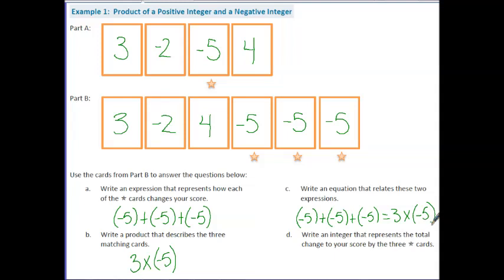Negative 5 plus negative 5 plus negative 5 is equivalent to 3 times negative 5. If we look at these two, we know that the final value of these cards: negative 5 plus negative 5 is negative 10, and negative 10 plus negative 5 more is negative 15. Notice I would get the same thing with the product because they're equivalent — so 3 times negative 5 is negative 15.